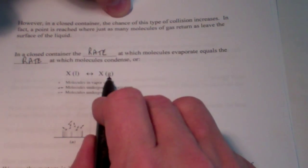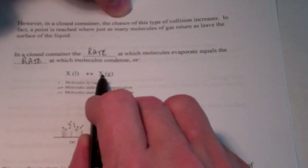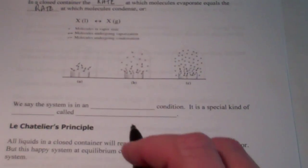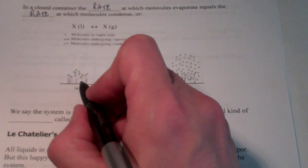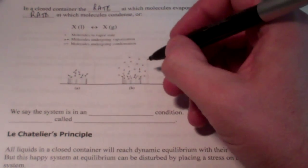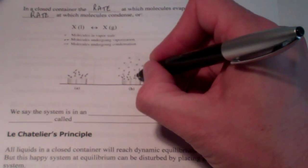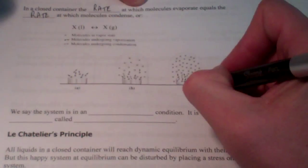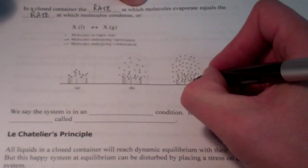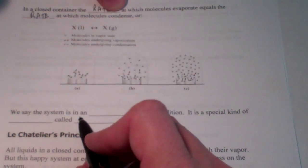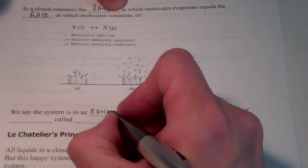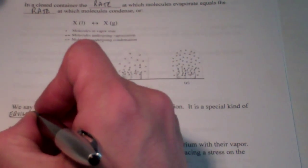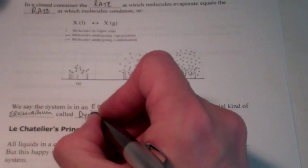The particles that are liquid are becoming gaseous, and the gas particles are returning to their liquid phase. This symbol — an arrow going both ways — means they've reached what we call equilibrium. Looking at this picture of a dome covering a beaker of water: initially all particles are leaving the surface, but eventually some return and condense. A point is reached where the number of particles in the vapor state remains constant. We call this a dynamic equilibrium.